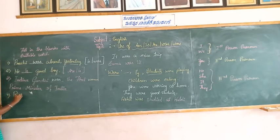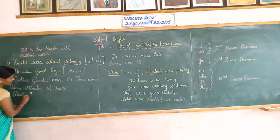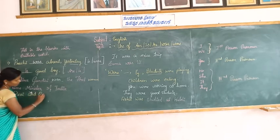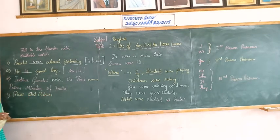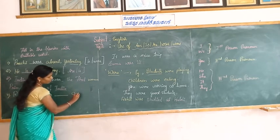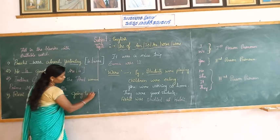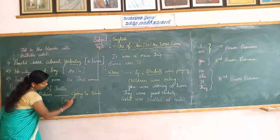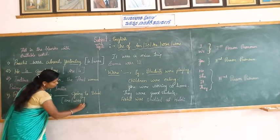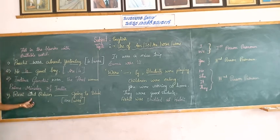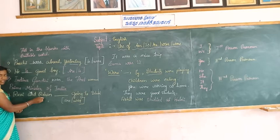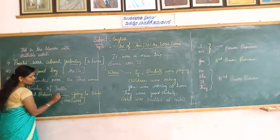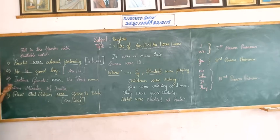Ravi and Rohan ___ going to school. Ravi and Rohan — there are two students, so that is plural. We use 'are'. Ravi and Rohan are going to school.